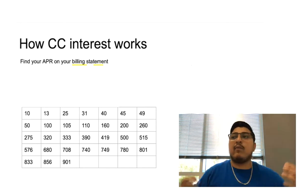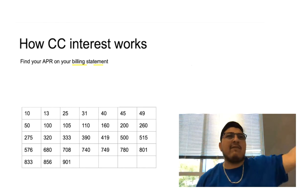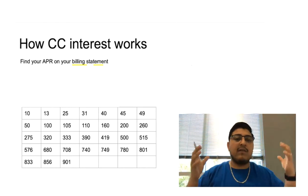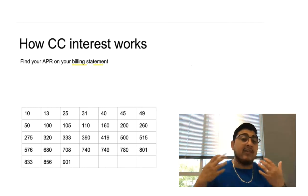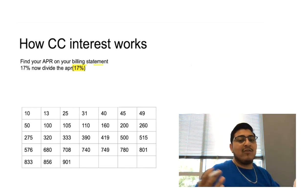I have credit cards that have 30% interest, I have credit cards that have 10% interest. It's all going to vary. I actually pulled one - my Bank of America is actually 17% APR, so that's the one I'm going to use for this tutorial.